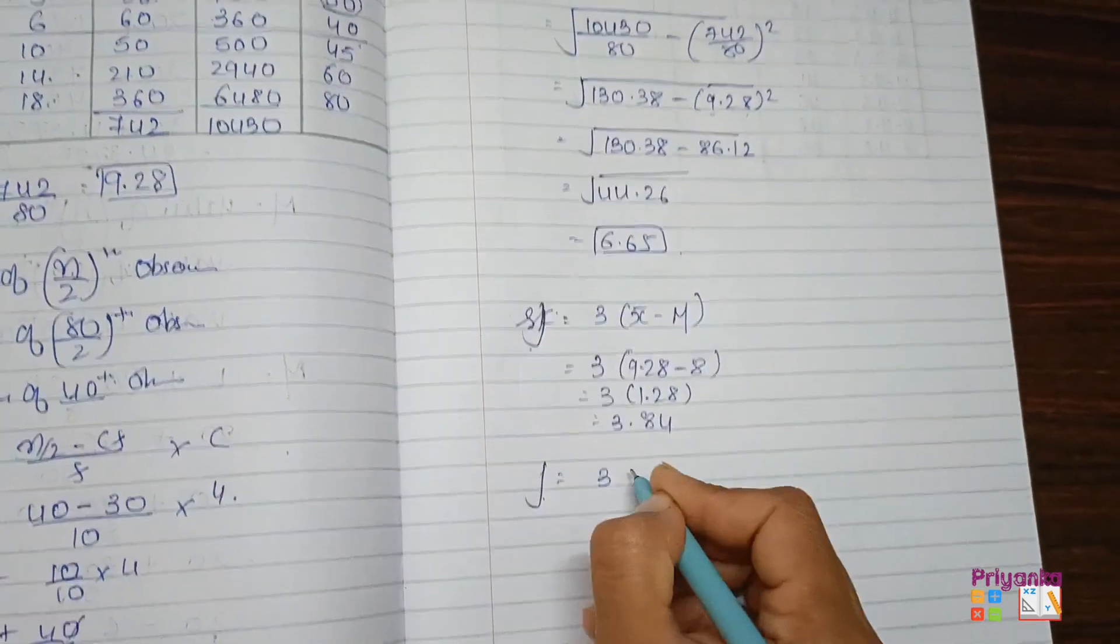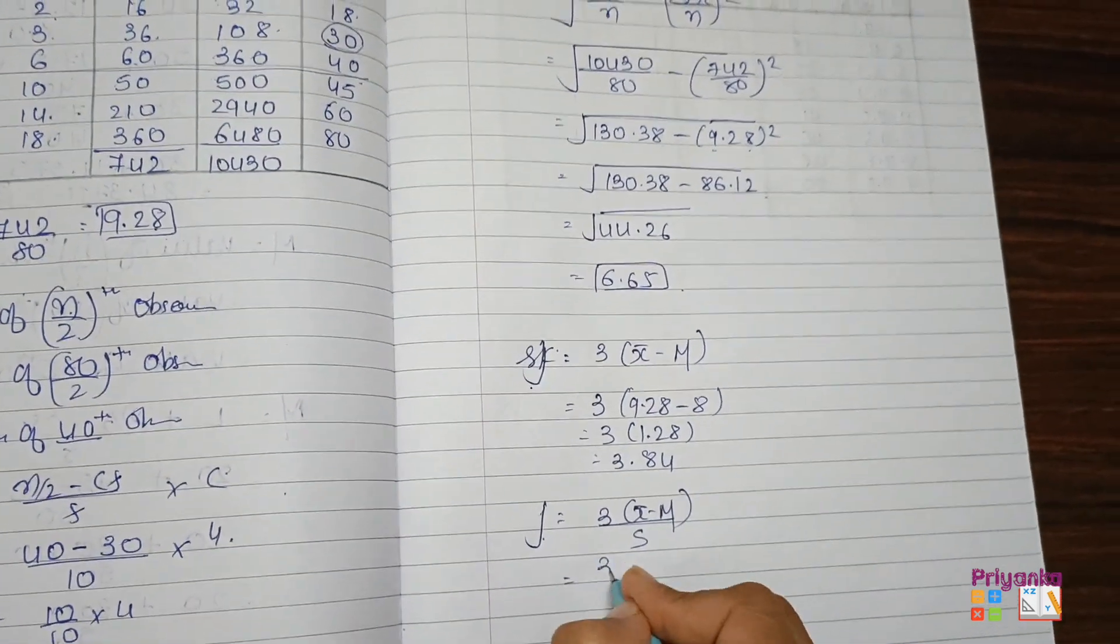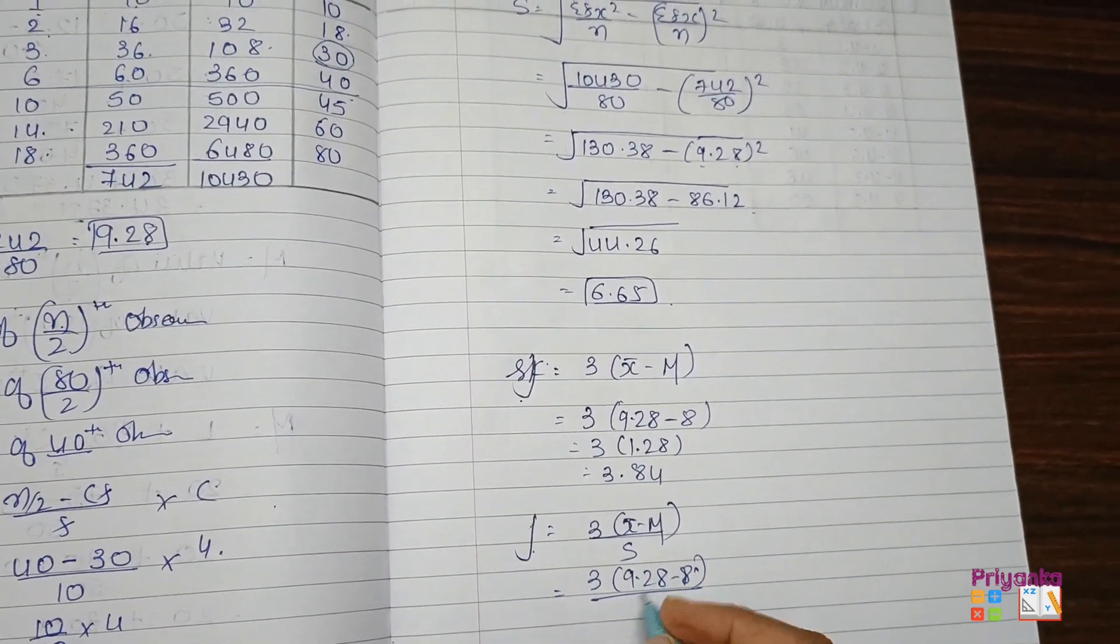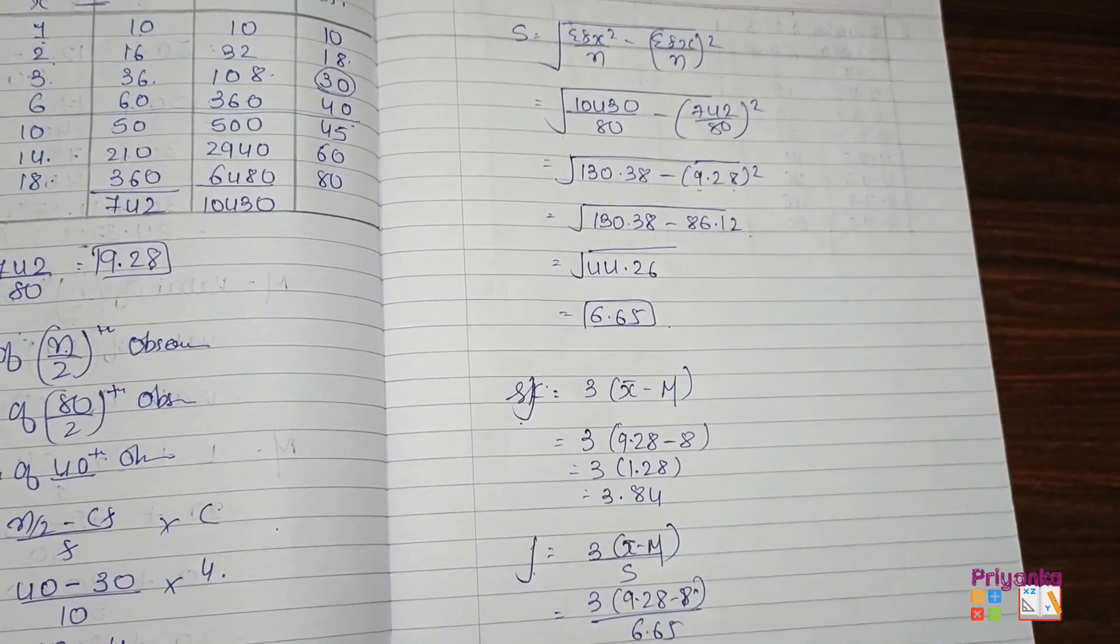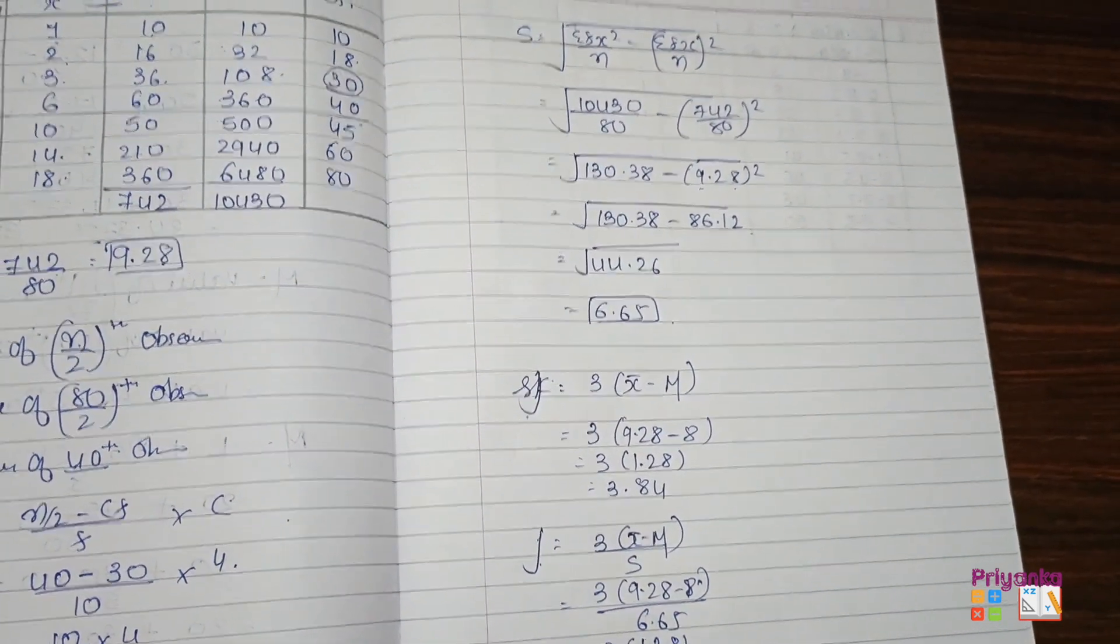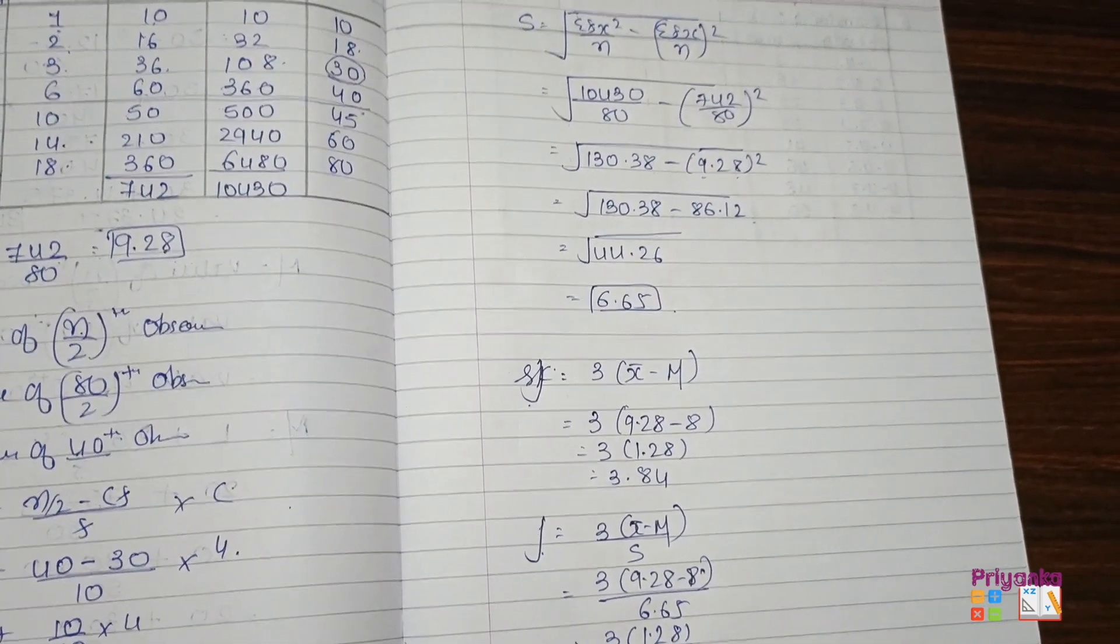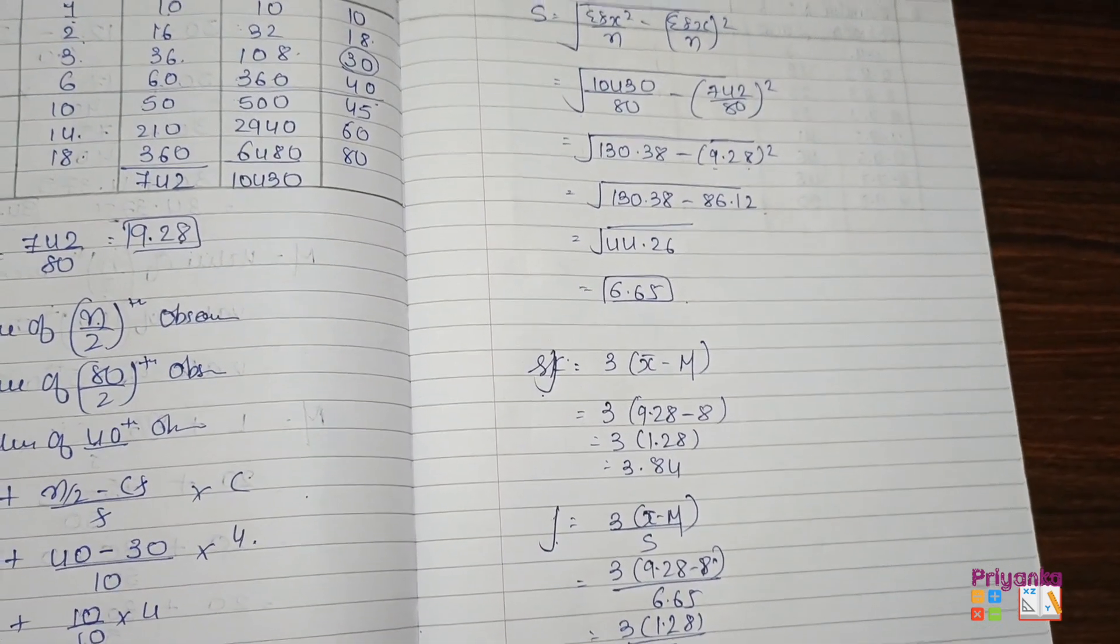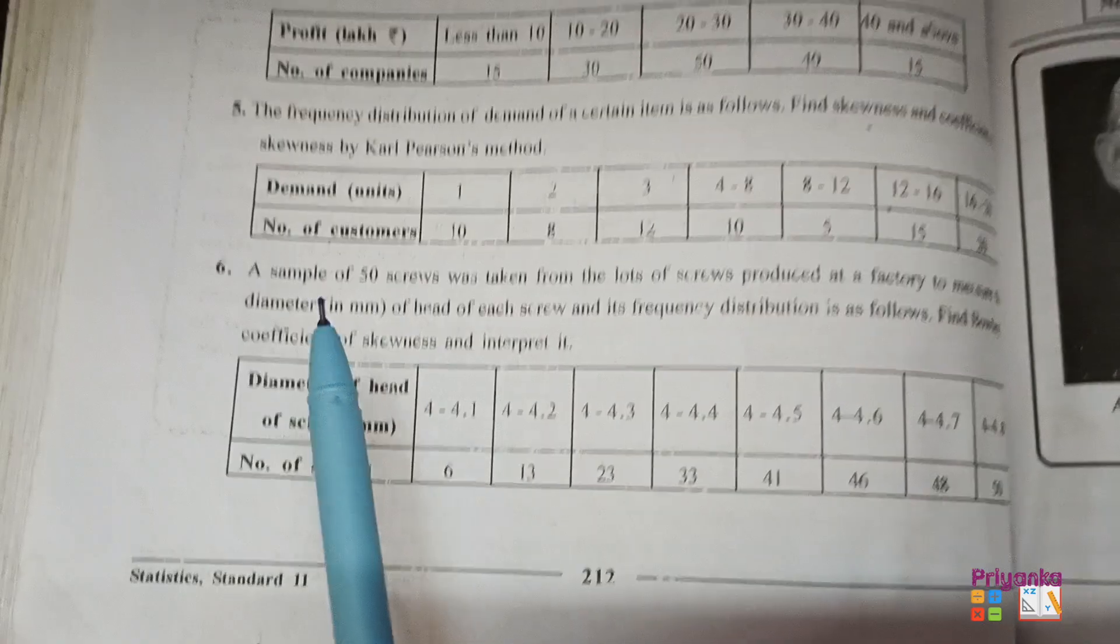Next the question is asking is the coefficient of skewness, where the same formula but with standard deviation. So 3 times 9.28 minus 8 upon the standard deviation is 6.65. Just copy down the steps what we have already solved, that is 3.84 divided by 6.65, and here we get the final answer 0.58. So here we complete question number 5, moving to the next question number 6.